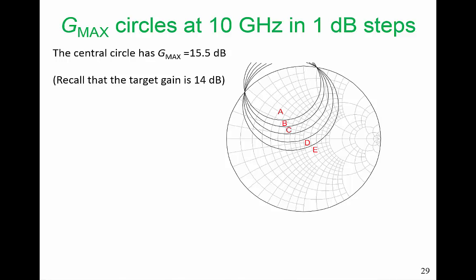So this first circle indicates what the gain will be at Gmax, which is 15.5 dB. This circle here is when we're 1 dB lower, 14.5 dB. And we see our 14 dB number is probably going to be around about here. So we actually have quite a lot of trade-off space.